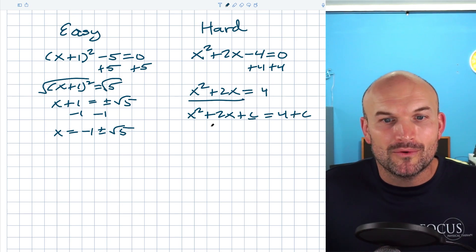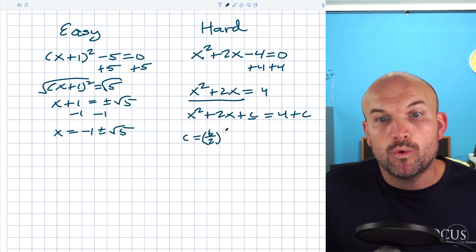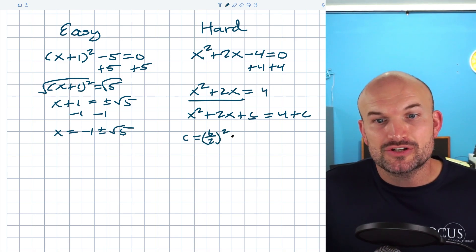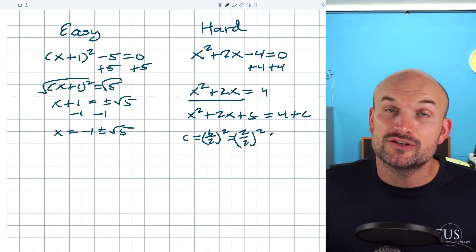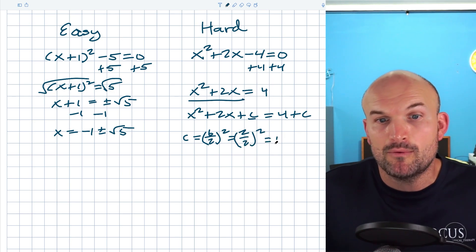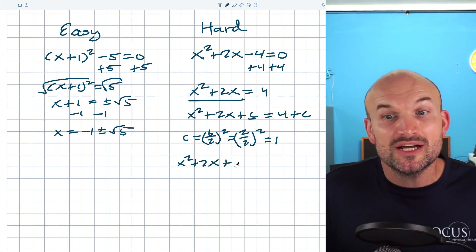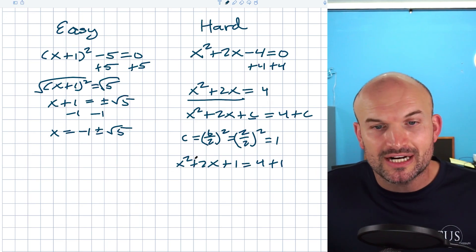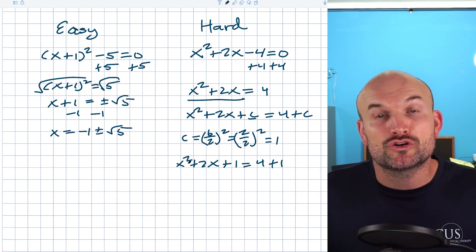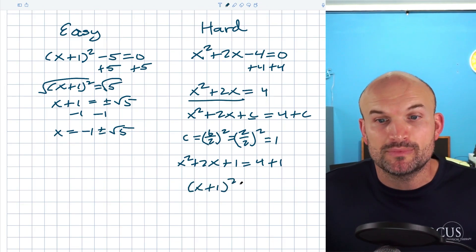We need to figure out what c is. Remember, c = (b/2)², and b in this case is 2, so 2 divided by 2 is 1, and 1 squared is 1. Therefore I have x² + 2x + 1 = 4 + 1. I've created a perfect square trinomial that I can rewrite as a binomial squared: (x + 1)² = 5.